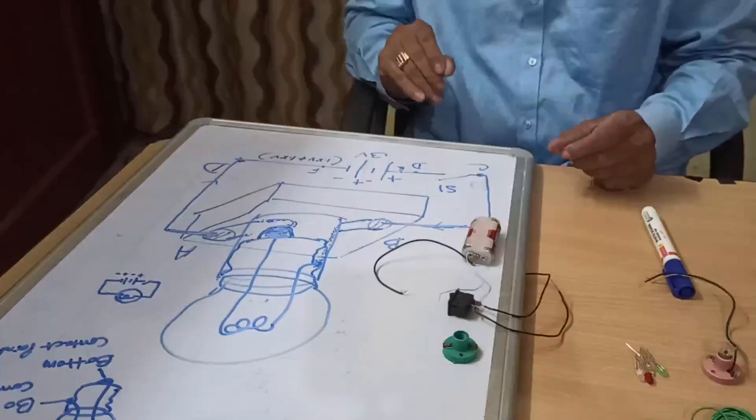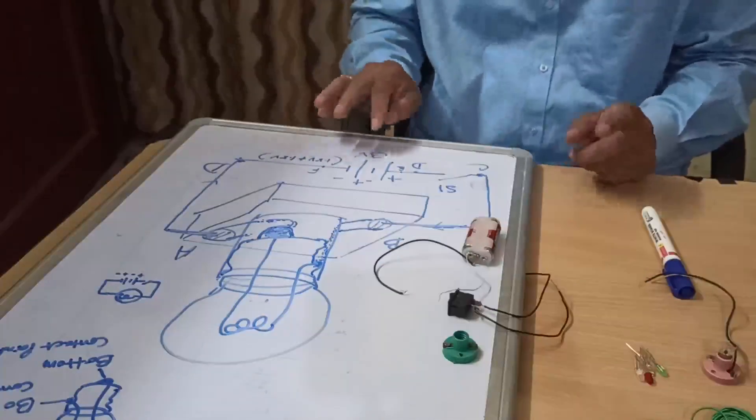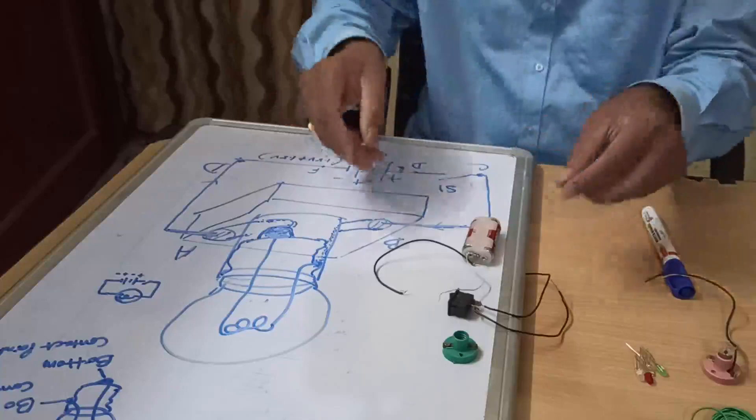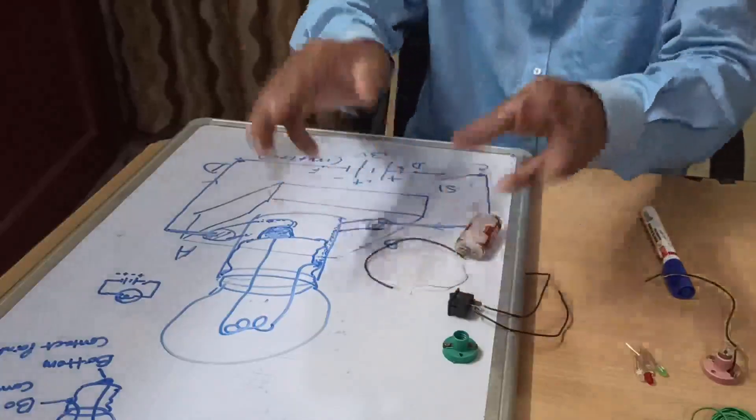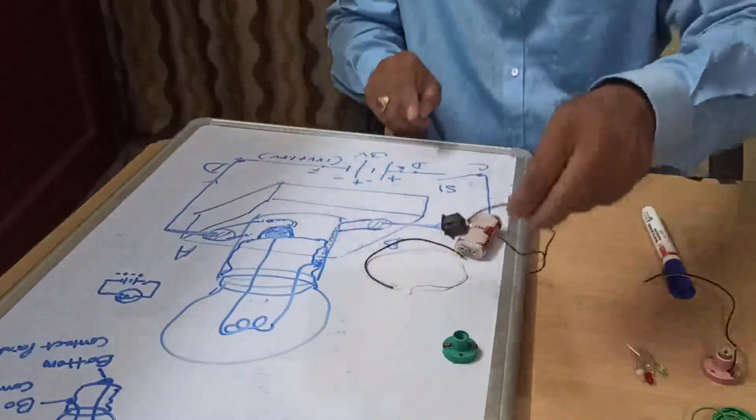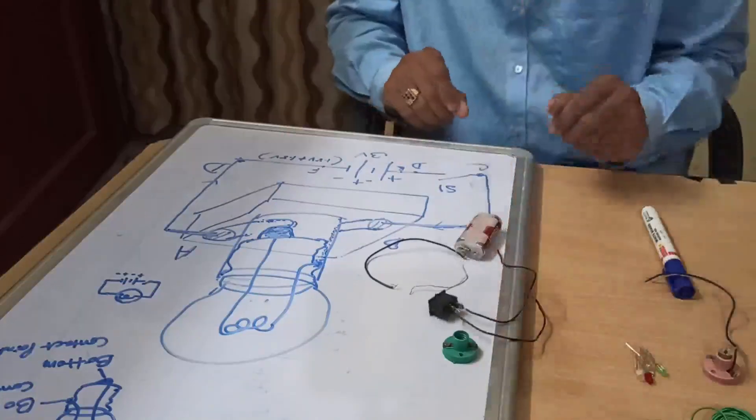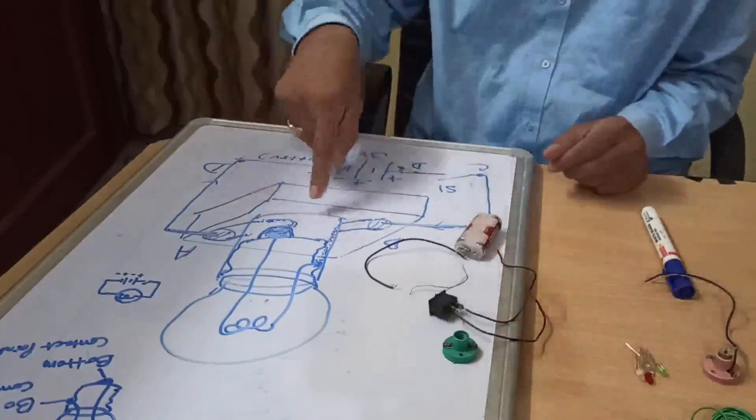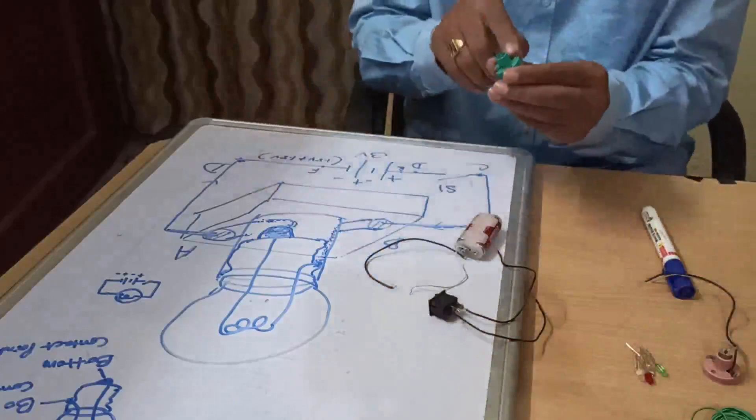So you see what to do - battery connection is E and F, these two terminals are E and F. Switch CD, this is CD, and holder, this is B and A.